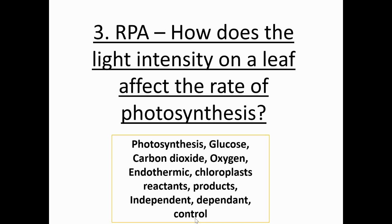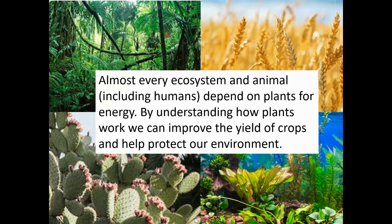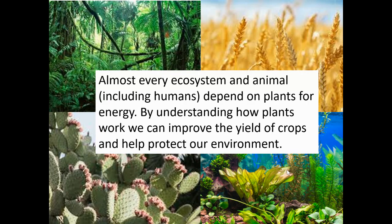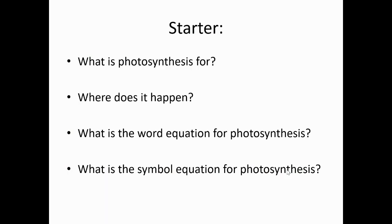Make sure that you've got that driving question underlined. Almost every ecosystem and animal depends on plants. By understanding how they work, we can improve the yield of crops — what we eat — and help protect our environment, which we completely rely on plants for. It's really important for conservation of all species to understand plants. Although all of our food comes from plants — even if you were eating meat, that meat has to be eating something, and that something comes from plants that we grow.